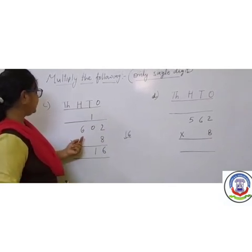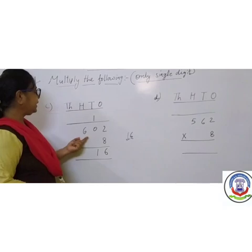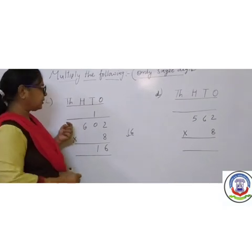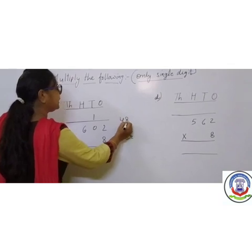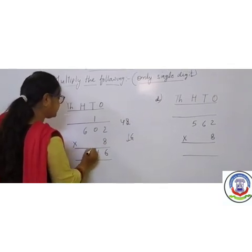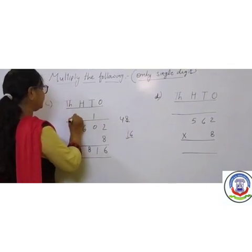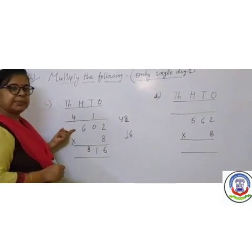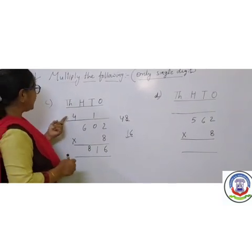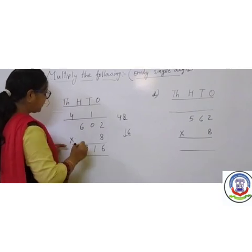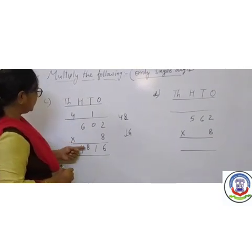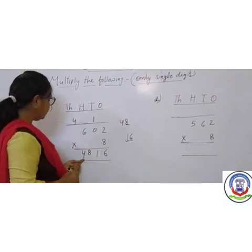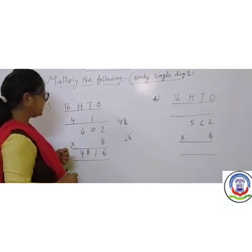Next, 100's place: 6 multiplied by 8 — 6 eights are 48. Write 8 in the 100's place and carry forward 4 to the 1000's place. Write 4 in the 1000's place. Our answer is 4816.